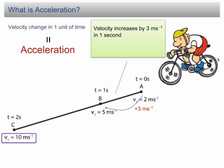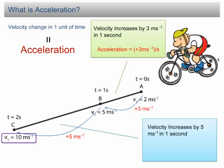This velocity change in one unit of time is called the acceleration. In other words, the acceleration of the cyclist from A to B is positive 3 m per second per second. From B to C, the velocity increases from 5 m per second to 10 m per second. It increases by 5 m per second in 1 second. Therefore, its acceleration is positive 5 m per second per second.